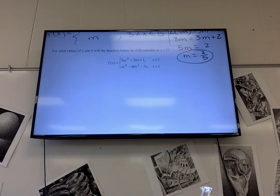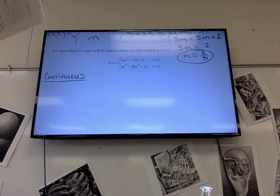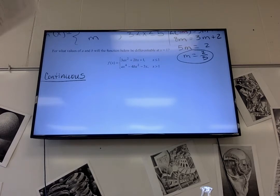So, for what values of A and B will the function below be differentiable? And x equals 1. So, continuity. Oh my gosh. That's a lot of letters. Oh my gosh. There's so many letters. You're right. So F of 1 exists when x is 1. So that's 3A plus 2B plus 1.